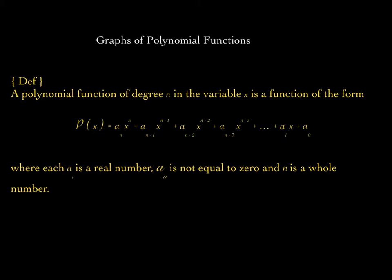It's important that a sub n is not equal to 0. Zero is a real number, but we do not want to let a sub n be 0, or else it would wipe out this whole first term. Another important property of a polynomial function is that n must be a whole number.